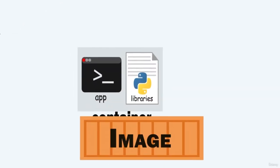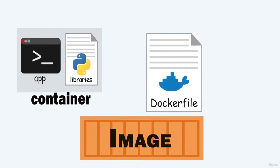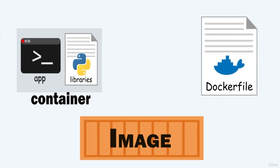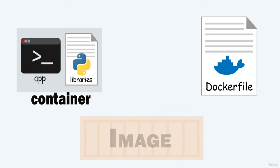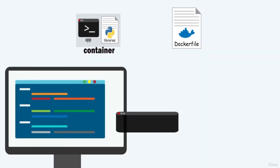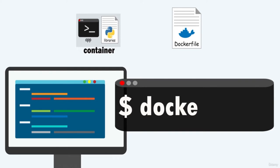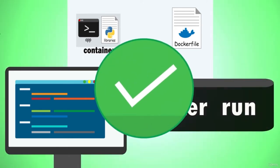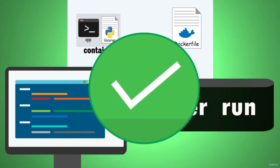This is a Docker image, backed up with the application and the environment required by the application to run. This is a Dockerfile, which is a set of commands that a user can call to assemble an image. Now with the help of the Docker run command, you can run your application on any platform. This is how Docker works.